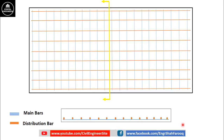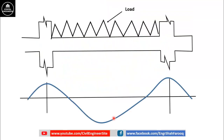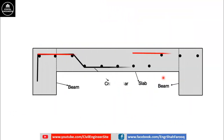In most cases in a slab, the tensile stress is at the bottom fiber, so you have to provide steel reinforcement at the bottom. But if in a certain case a negative bending moment or hogging bending moment exists, you have to provide top reinforcement also. That was all for today — thank you very much for watching the video in full. Please do not forget to like this video.